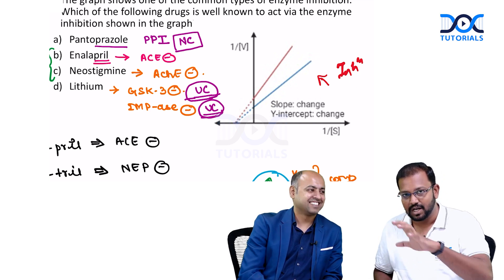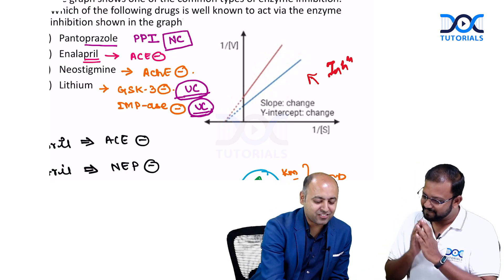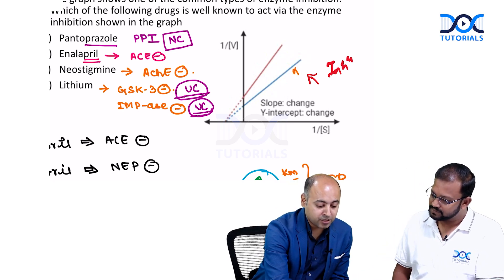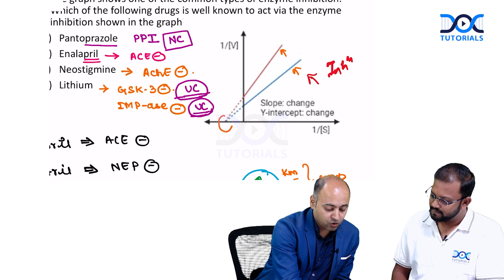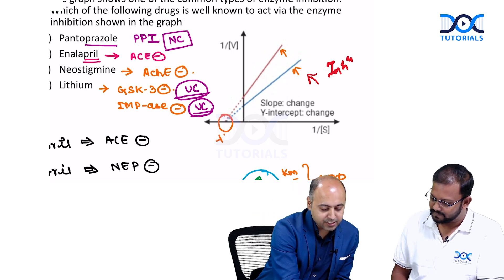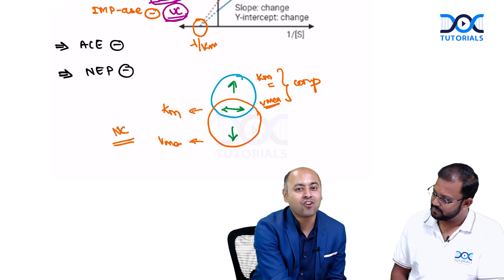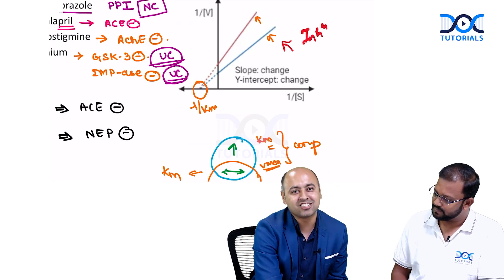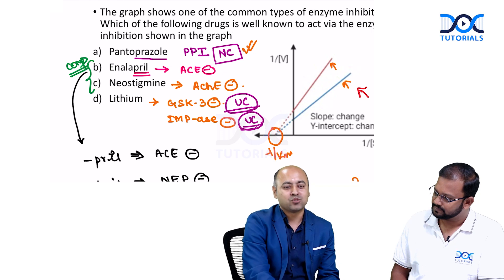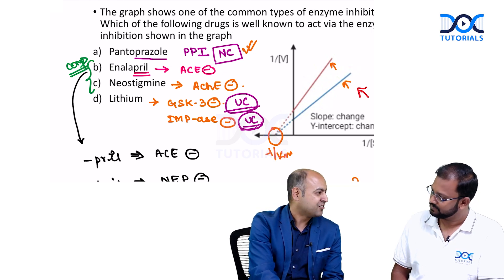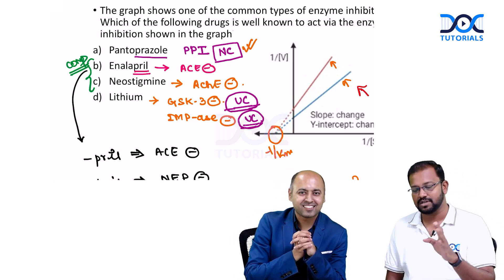Now, looking at the two graphs — the uninhibited and the inhibited — what is the common point? The common point is on the x-axis, where the value is −1/Km. This means Km is not changing. As explained, when Km is unchanged but Vmax is changing, we are looking at non-competitive inhibition. Therefore, the answer is pantoprazole, which follows non-competitive inhibition.